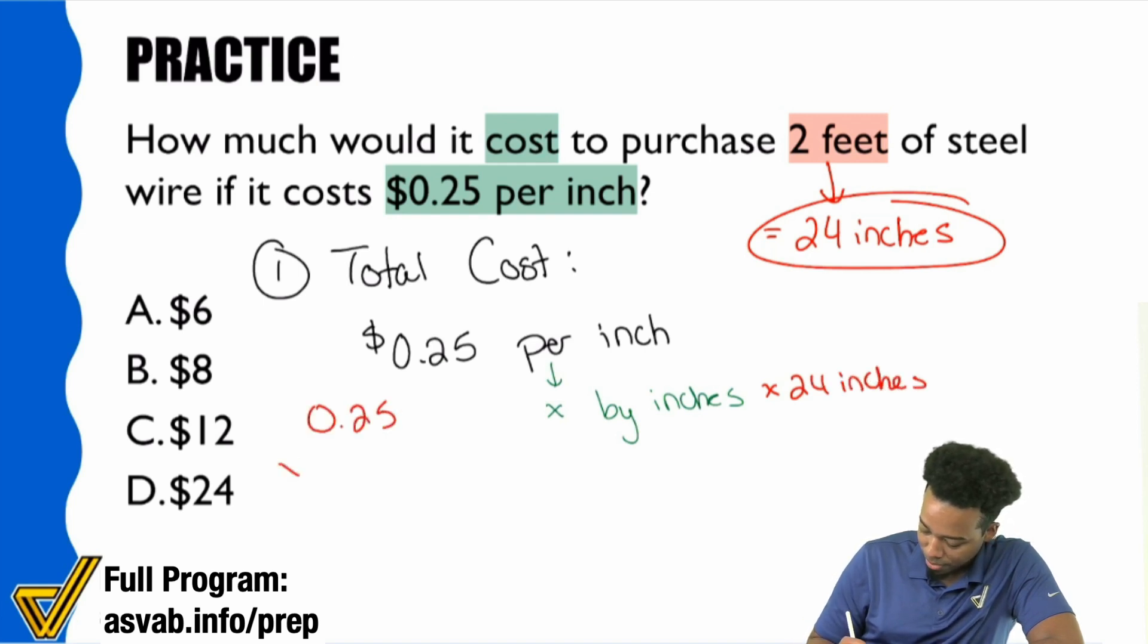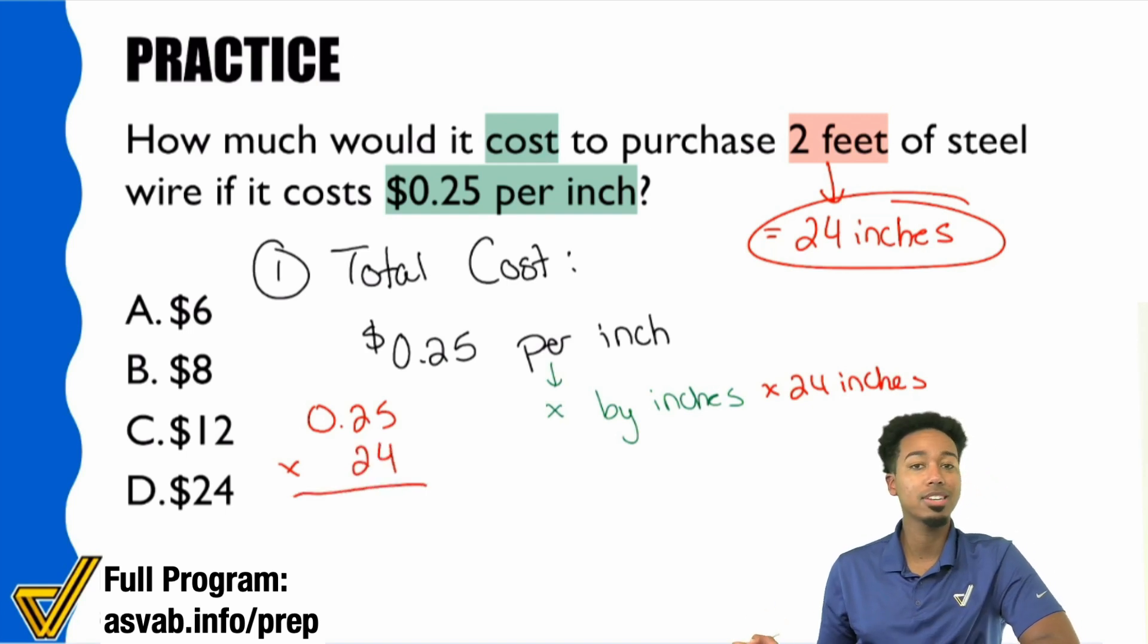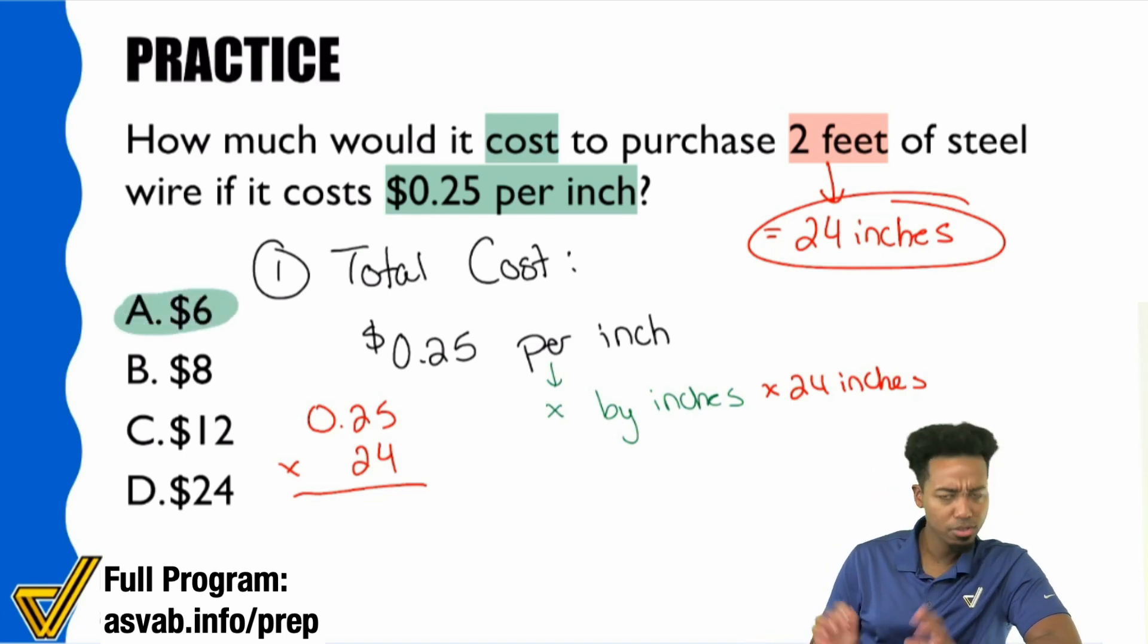0.25 times 24. Another way that you could look at this is, isn't 25 cents one quarter everybody? And so multiplying by 0.25 is the same thing as dividing by 4. 24 divided by 4 is 6, and the answer is $6. And you're done.